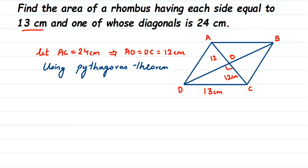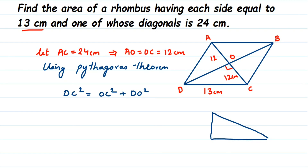Applying the Pythagorean theorem: hypotenuse squared equals the sum of squares of the other two sides. The hypotenuse is DC, so DC² = OC² + DO². The right angle is at point O. OC = 12, DO is unknown, and DC = 13 (the side of the rhombus). So: 13² = 12² + DO².